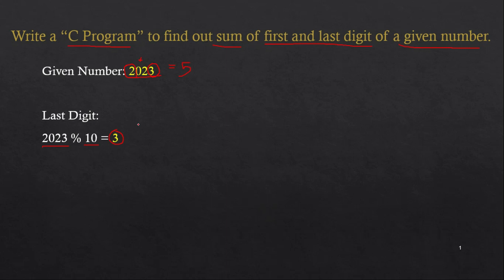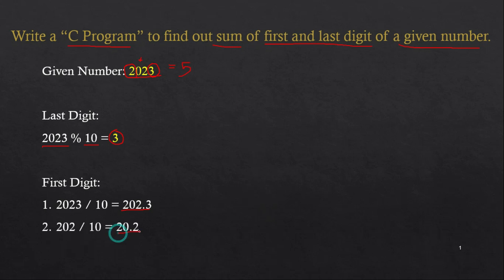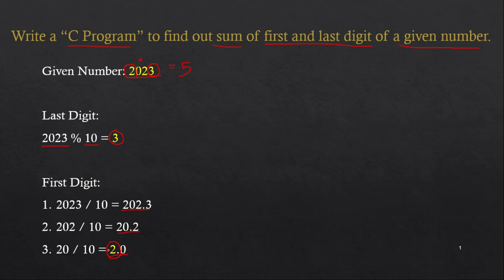For the first digit, the logic is: if we divide the number by 10 it becomes 202.3, divide again and it becomes 20.2, divide again and it becomes 2. We keep dividing by 10 unless and until the number becomes less than 10. That is how you find the first digit of a number.